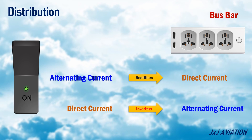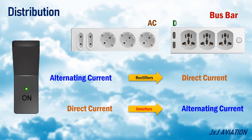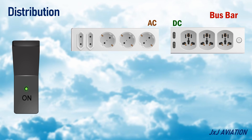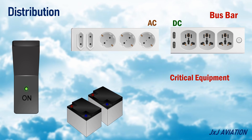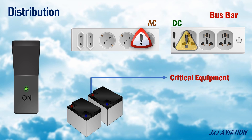Both AC and DC bus bars may be installed for different electric equipment. In addition to these buses, the aircraft's critical equipment are also connected to the batteries, to ensure these systems are available even in case of a total power failure.